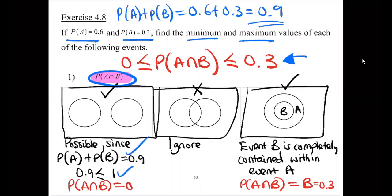Since 0.9 is less than or equal to 1, it is possible that the events are disjoint, or non-overlapping. That's why we say they can be mutually exclusive. And if they can be mutually exclusive, we know that the probability of the intersection under that condition is going to be equal to 0. We can automatically think of this 0 as being the minimum, because probability cannot go below 0.